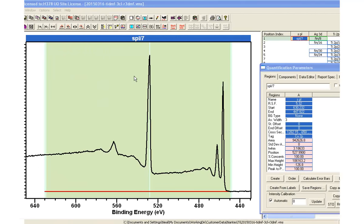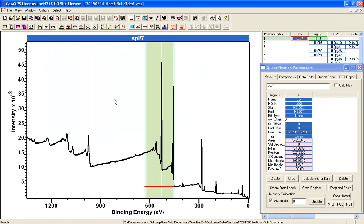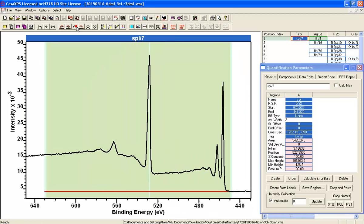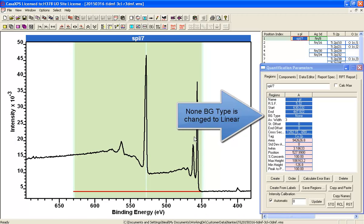We're going to investigate the different background types in CASA using this survey spectrum to illustrate the basic forms. So we'll start off with a none, which is a horizontal background.